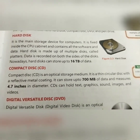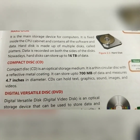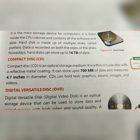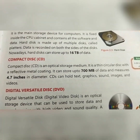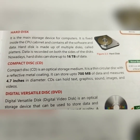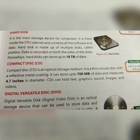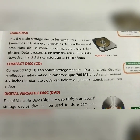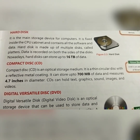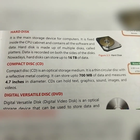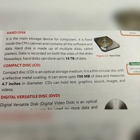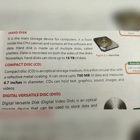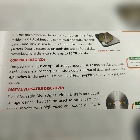Next is the Compact Disk — CD. A compact disk is an optical storage medium. It is a thin circular disk with a reflective metal coating, and it can store up to 700 MB of data and measures 4.7 inches in diameter. CDs can hold text, graphics, sound, images, and videos.